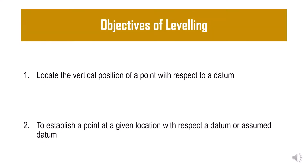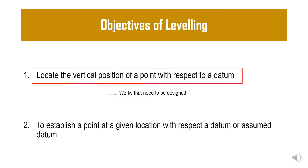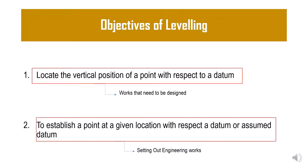The objective of leveling is: first, to locate the vertical position of a point with respect to a datum; or second, to establish a point at a given location with respect to a datum or an assumed datum. Datum can be either a standardized datum of a particular country or region, or an assumed temporary datum for a particular project. Locating the vertical position is mainly used for design works, and the second objective is mainly used for setting out in engineering works.